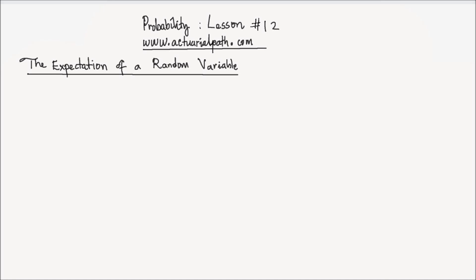Welcome to lesson number 12 on Probability. In this lesson we study the expectation of random variables. The expectation of a random variable is the average value taken by that random variable — it could mean the mean or the center. Some people call it the first moment, the long-run average, or simply the mean of the random variable.